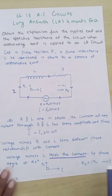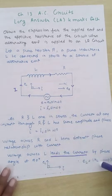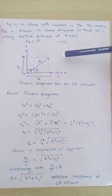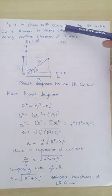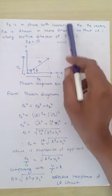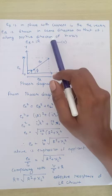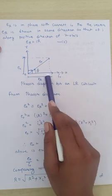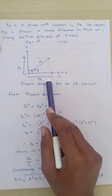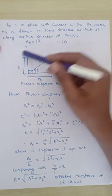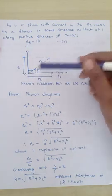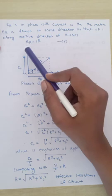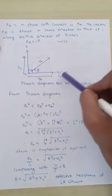XL is the reactance — the resistive nature of the inductor. Similarly, voltage across the resistor is in phase with the current I₀, where I₀ is the maximum current supplied by the AC supply. In the phasor diagram of the LR circuit, the voltage across the inductor EL leads the current by 90 degrees, while ER is along the direction of the current.